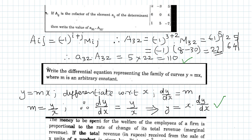So we get the minor as the 2×2 matrix with entries 2, 5, 6, 4. The minor M₃₂ is the determinant of that matrix: 2, 5, 6, 4. The determinant value is 8 minus 30, that is −22. So (−1)^5 × (−22) = 22. Therefore the cofactor A₃₂ is equal to 22.